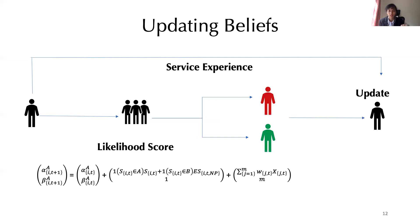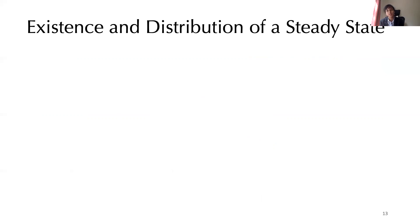The updating rule involves the posterior distribution being decomposed into a sum of the prior parameters, the information accumulated from private learning, and the social information accumulated by the customer. The first question we ask is whether a steady state exists in this setting. Without learning, the decisions considered optimal at period one would remain optimal at every subsequent period. However, as a consequence of social learning, beliefs may change, and the customer may consider a different decision optimal at period t than at period t-1. Consequently, as service parameters depend on customers' decisions, those may change over time as well.